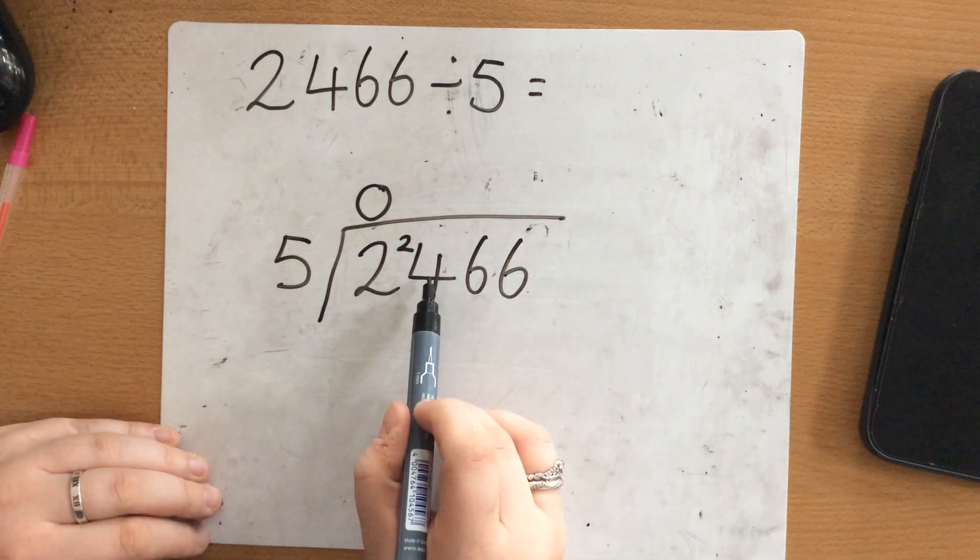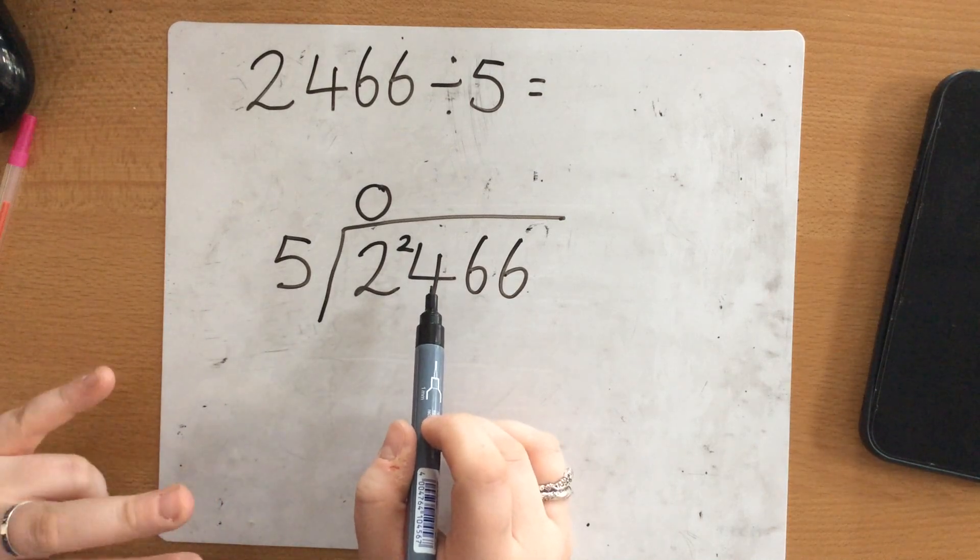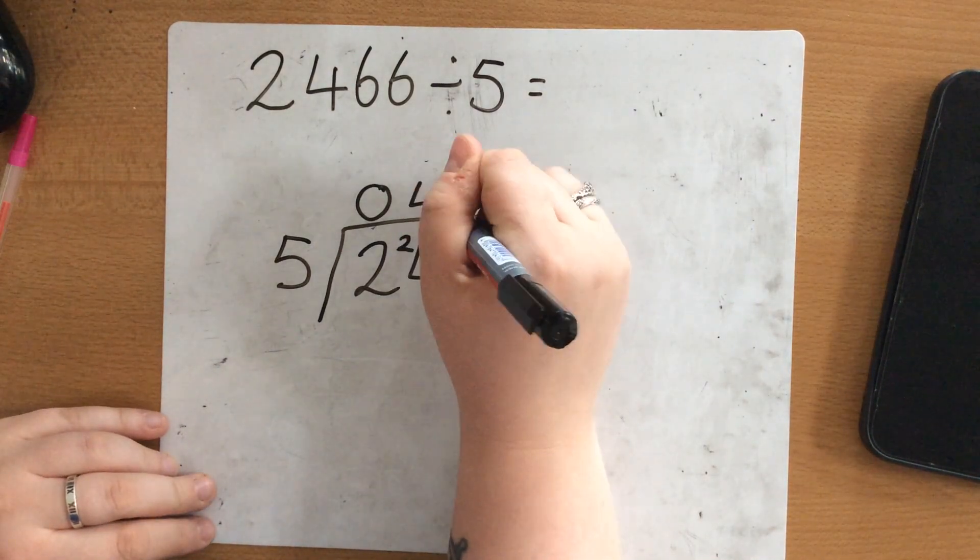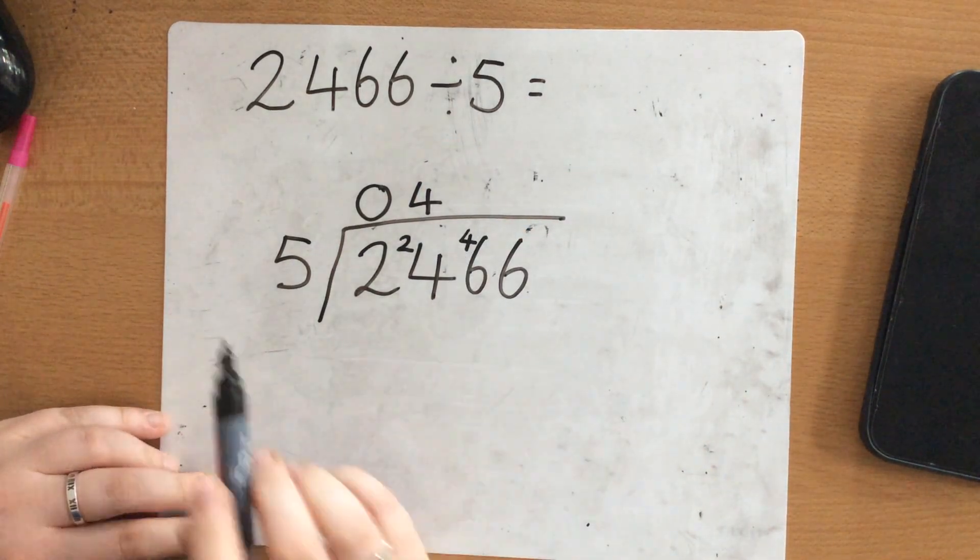5's into 24. Well I can get to 20. So 5, 10, 15, 20 that's 4 times with 4 left over. So that 4 gets carried across.